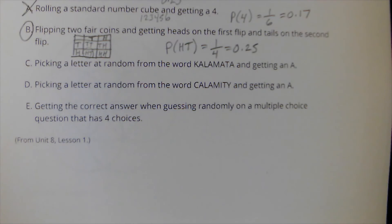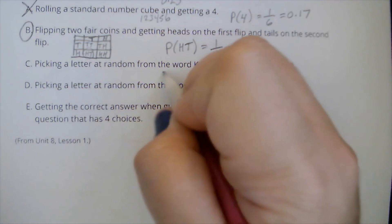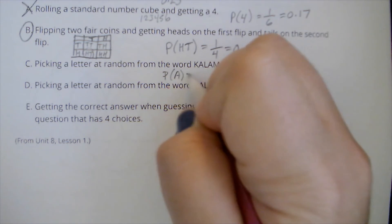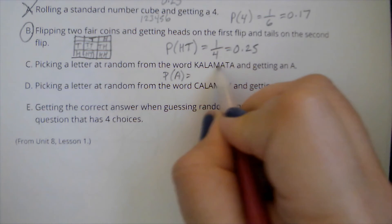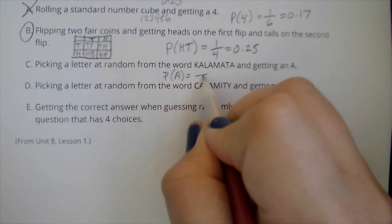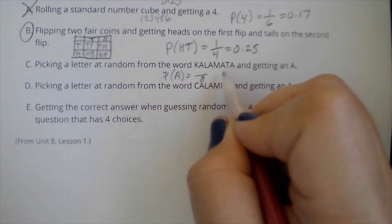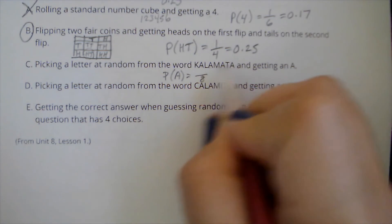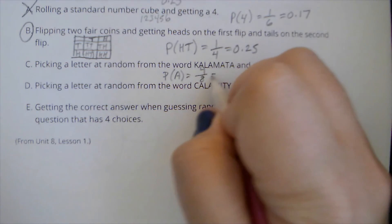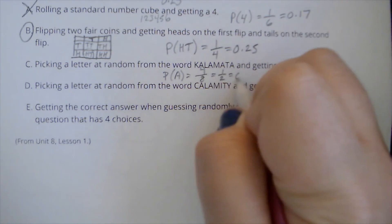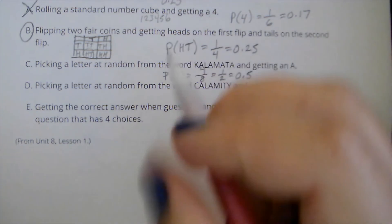Picking a letter at random from the word Kalamata and getting an A. So I want the probability of picking an A from this word, which has one, two, three, four, five, six, seven, eight letters. So out of the eight letters, the possibility of me getting an A, I have one, two, three, four of them. Four out of eight, which is one half, which is 0.5. So I don't want this one.